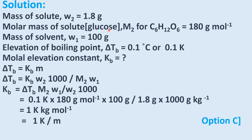Mass of solute W2 is given as 1.8 gram. The molar mass of solute — glucose (C6H12O6) — is calculated as: 12×6 + 1×12 + 16×6 = 180 gram per mole. Mass of solvent W1 is given as 100 gram.